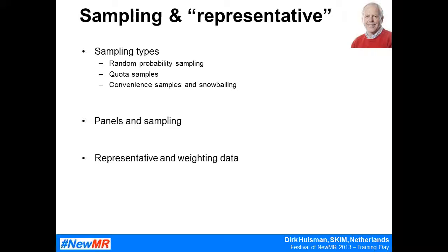Nowadays, panel agencies have large databases of people they know a lot about — who indicate they are willing to participate in research. Because they know a lot about these people, they can select those in the database who fit your population definition. From this group, they randomly draw a sample.